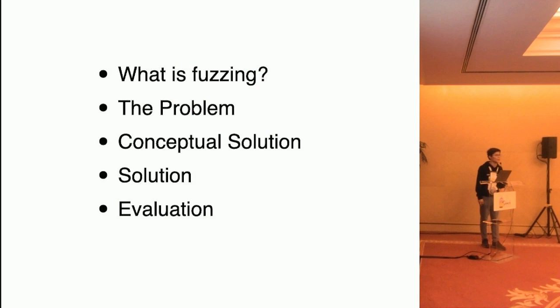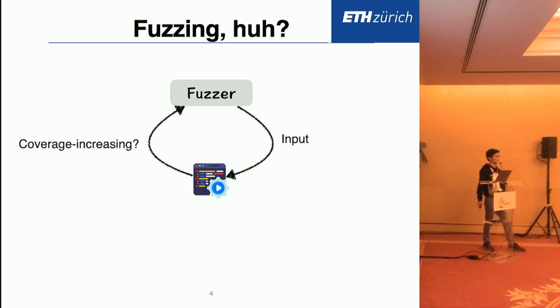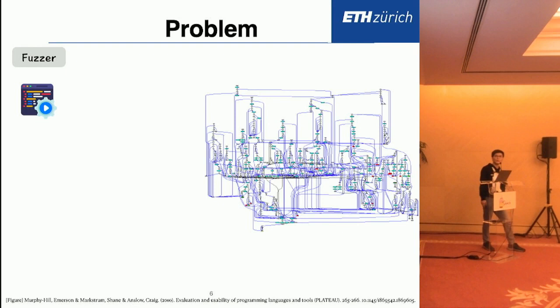First of all, what is fuzzing? For a fuzzer, you give it a target program. The fuzzer generates input, feeds it to the target program, and executes it on this input. At the end, it collects information from the execution to decide if this input is interesting or not. A typical feedback would be the coverage. The goal of fuzzing is to find bugs, and in order to do so, the fuzzer tries to maximize code coverage by finding all coverage-increasing inputs from all the inputs generated during fuzzing.